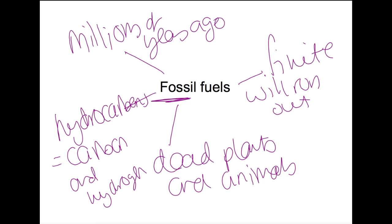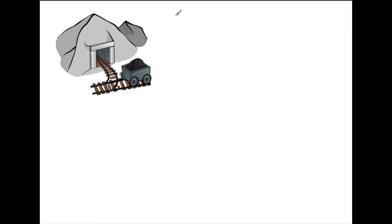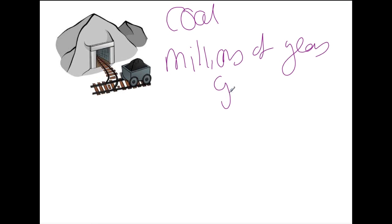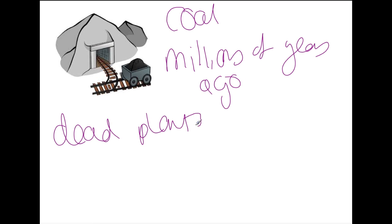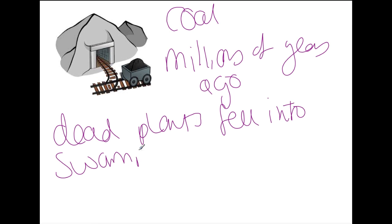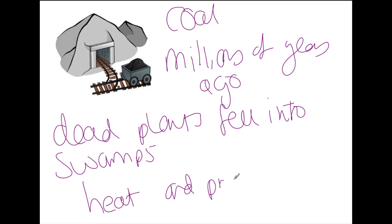Let's look now at how the fossil fuels were formed, starting with coal. Coal was formed millions of years ago when dead plants fell into swamps, where they would decay and turn into fossils. Through the action of heat and pressure, these fossils then turned into coal. We then dig up the coal and burn it to produce heat.